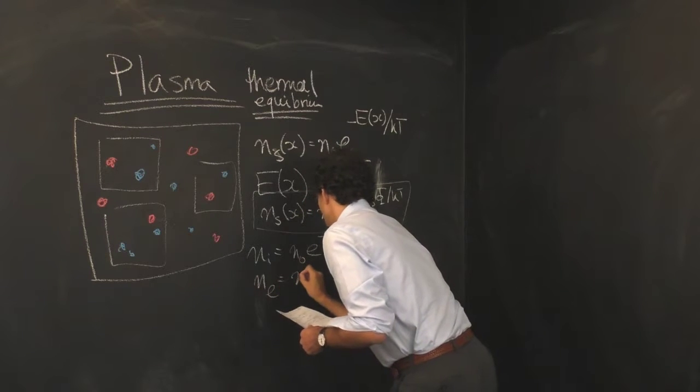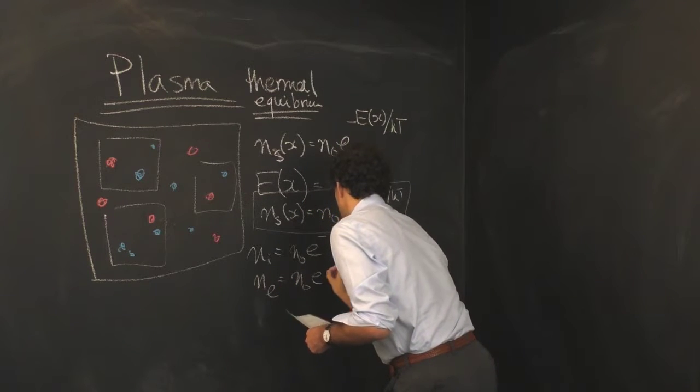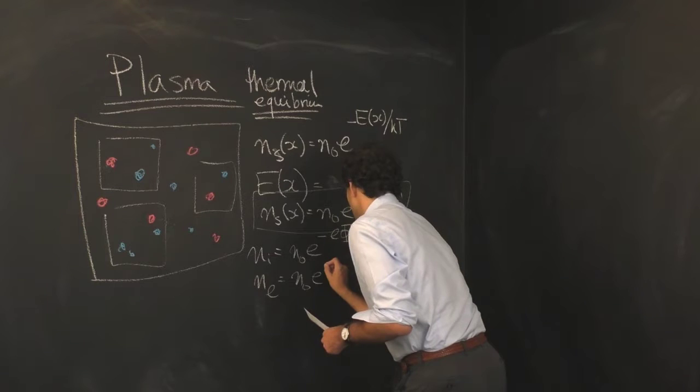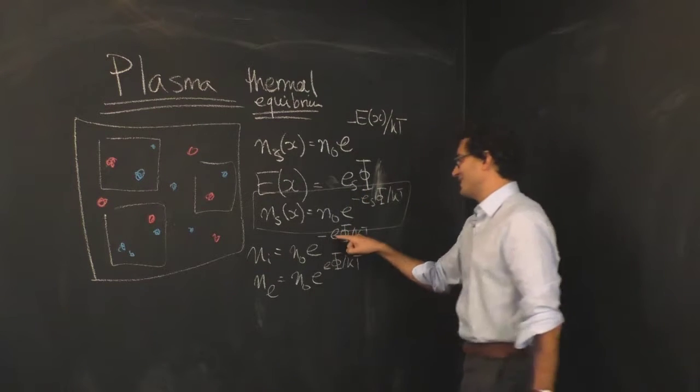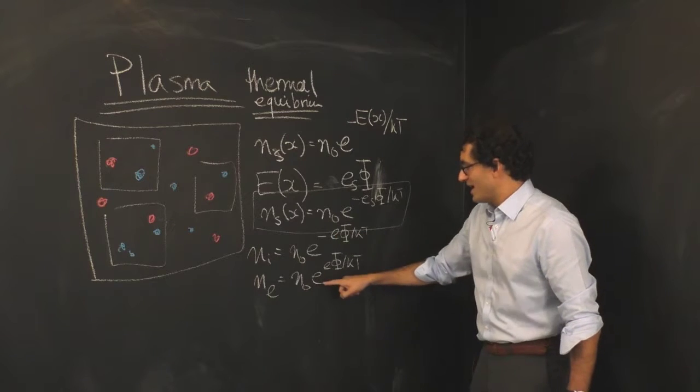And then the density of the electrons is equal to the overall density of the electrons in the system times e to the power of eφ over kT, where of course this e here is the electron charge and this e here is just the transcendental number in the exponential function.